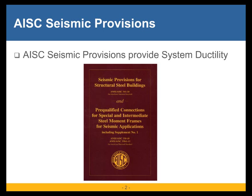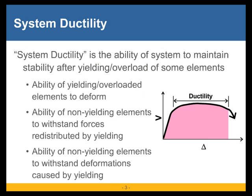Today, we are obviously here to talk about the AISC seismic provisions. These are provisions that are in addition to the specification for structural steel buildings — special provisions for seismic, where seismic ductility and seismic resistance is required. Basically, what these provisions do is attempt to provide a system ductility. One way to define system ductility is the ability of the system to maintain stability after yielding and overloading of some elements.